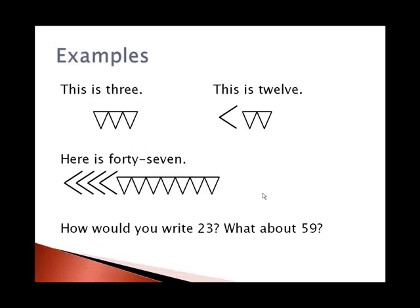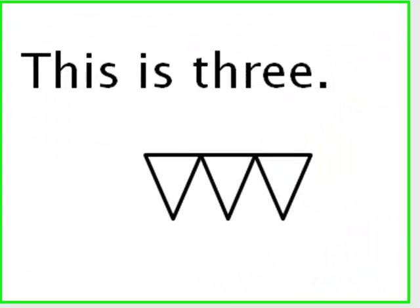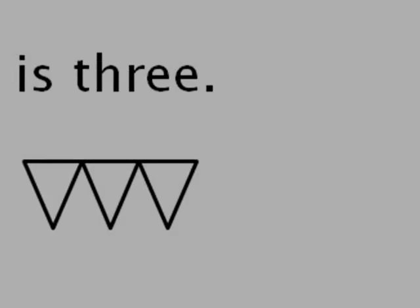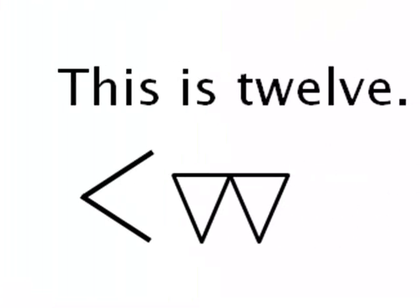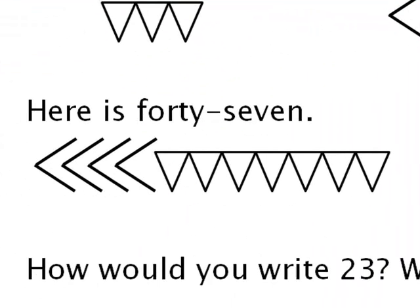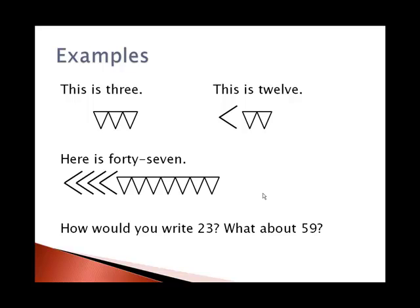Here are some example numbers that they've used. 3 looks like 3 triangles. 12, instead of 12 triangles, is 1 ten and 2 triangles. And 47 is 4 tens and 7 triangles. Not 47 triangles, which is good news. So how would you write 23? And what about 59? You may want to pause the video here and try to do that.